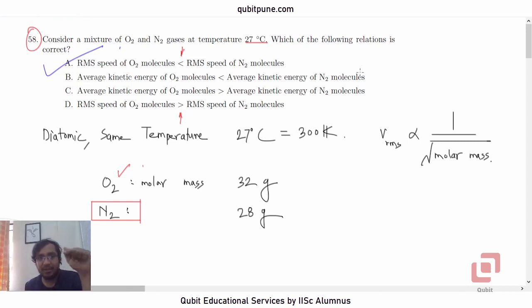It was either option A or D. And based on this relation, V RMS inversely proportional to square root of molar mass, and knowing the values of the molar masses of oxygen and nitrogen, we have arrived at the right conclusion. And that is option A.